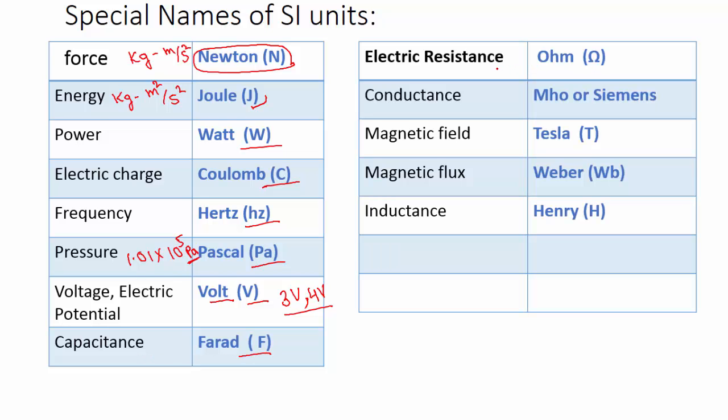Special names. For electric resistance we use ohms. In some circuits you have seen 3 ohm resistance or 4 ohm resistance. For conductance we use Mho or Siemens. For magnetic field we use Tesla. For magnetic flux we use Weber, in short form Wb. For inductance we use Henry.